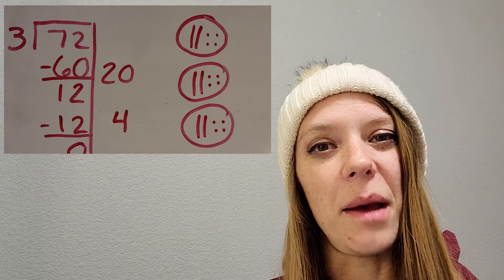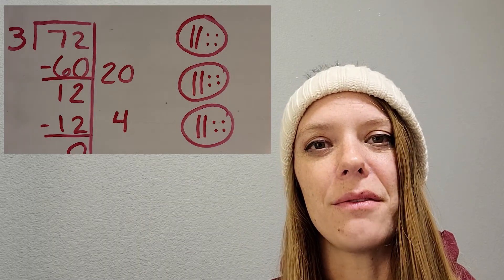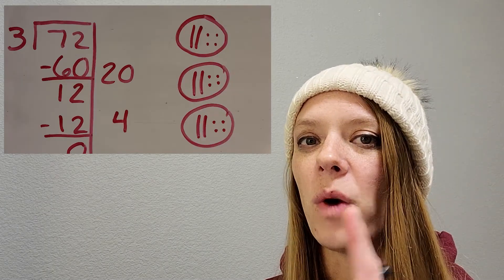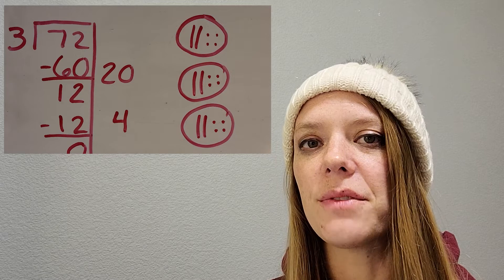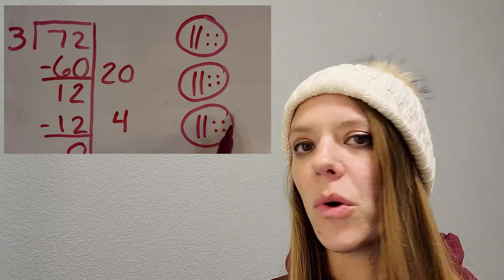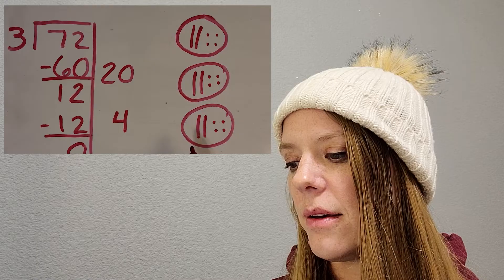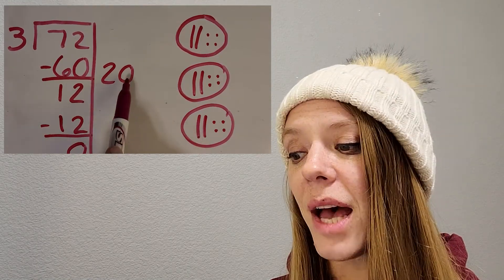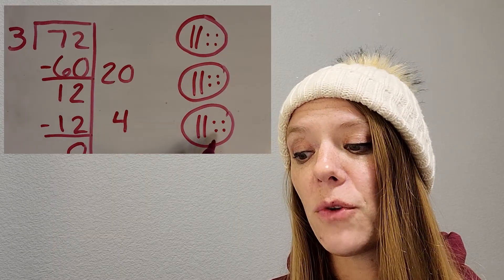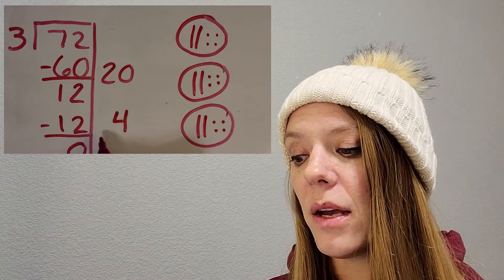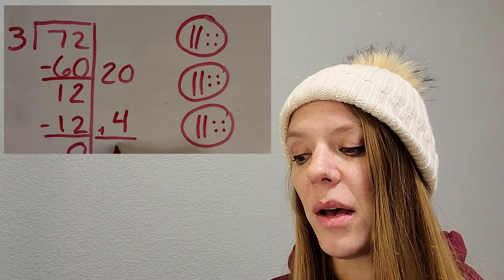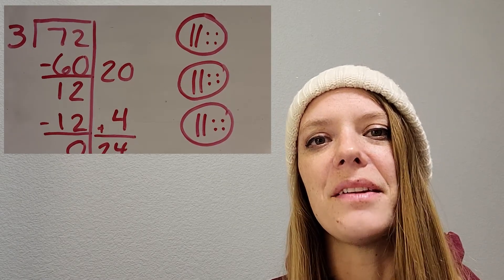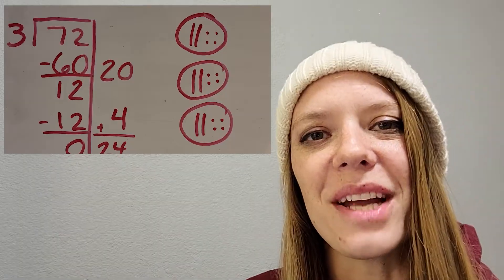But now there's one more step. Where does the answer live? When we do the equal groups drawing, we know the answer is in one group. But where does the answer live in the partial quotients strategy? I think you're finding a clue on the side — the twenty and the four. If you look at our groups, that's what each group looks like. So let's add those two up and we get twenty-four snowballs in each group. Awesome, great job!